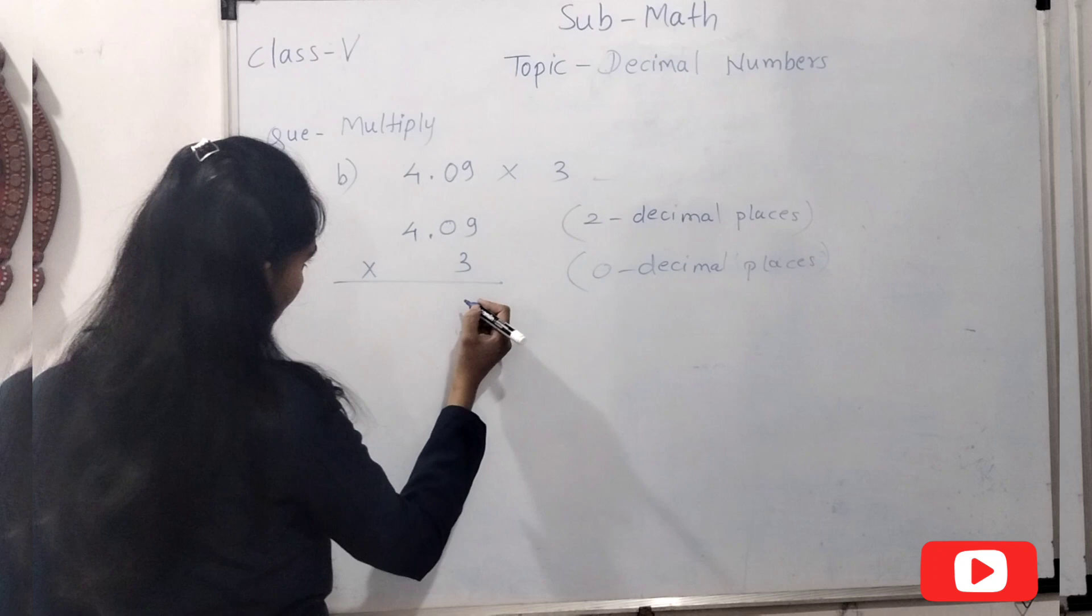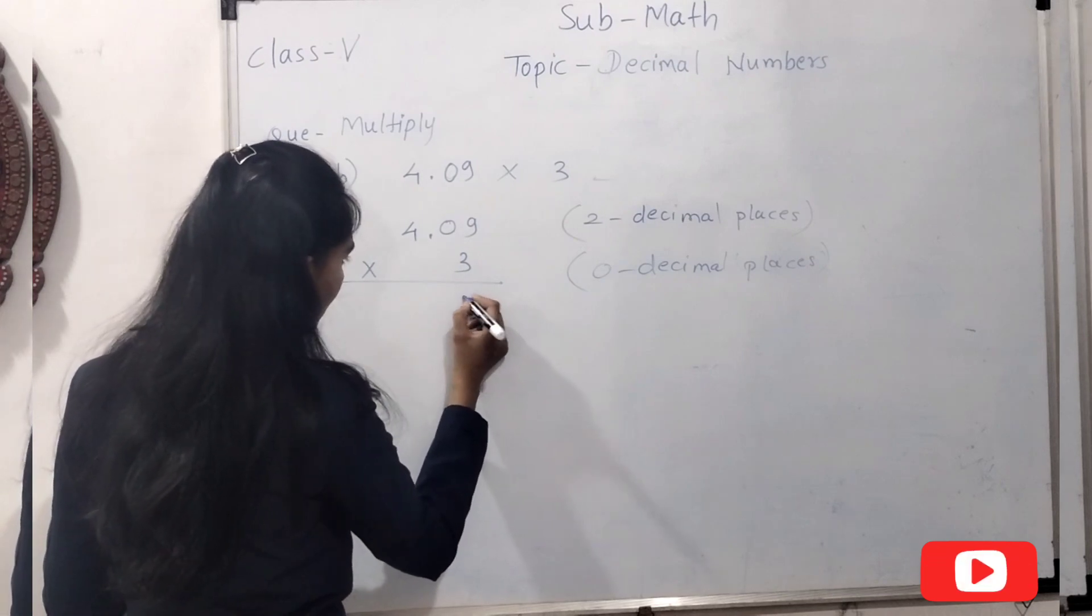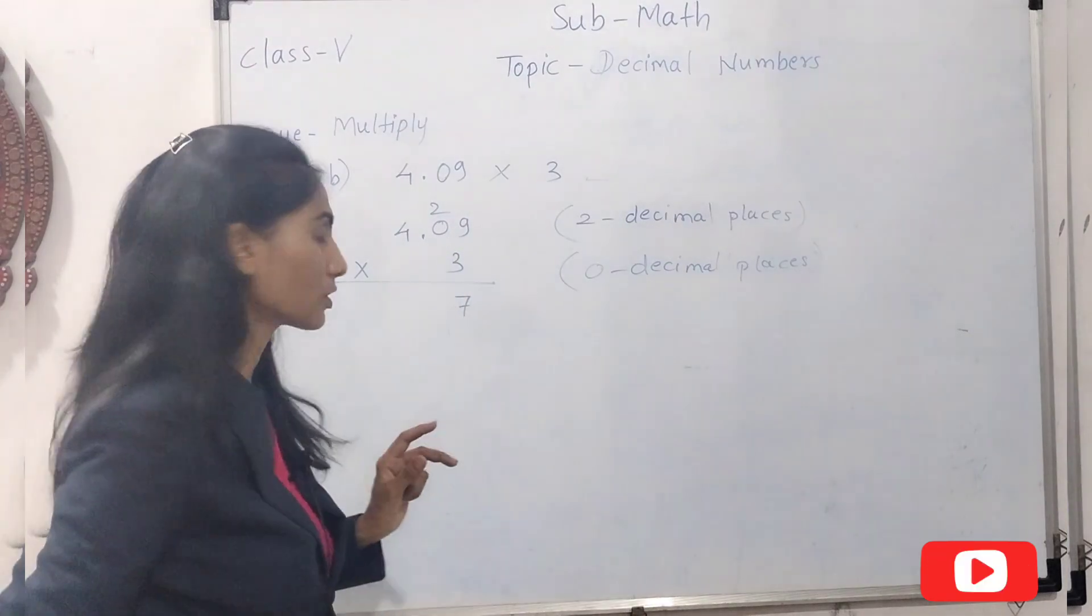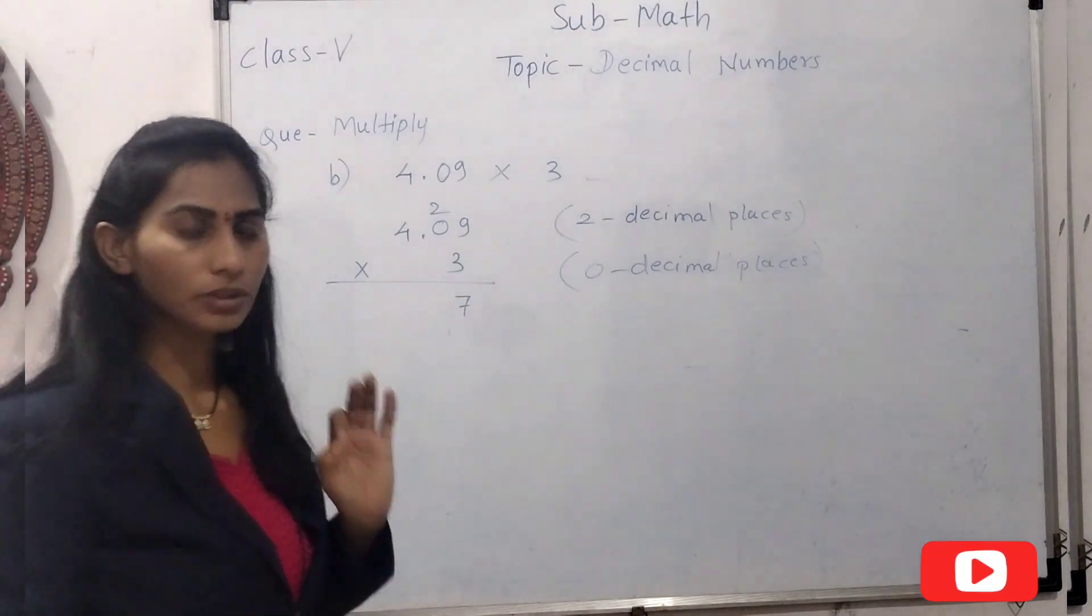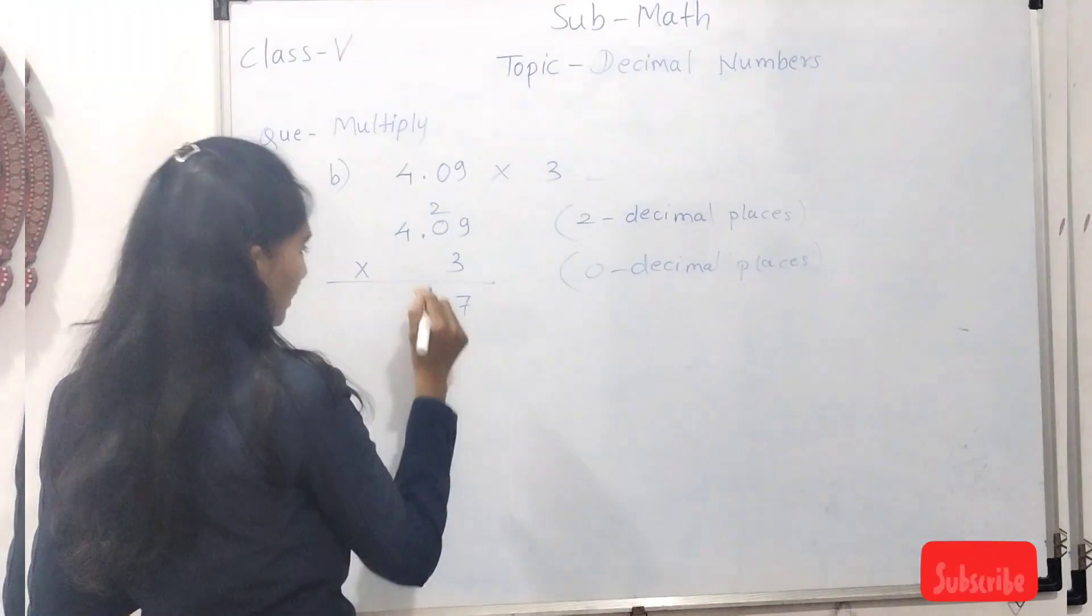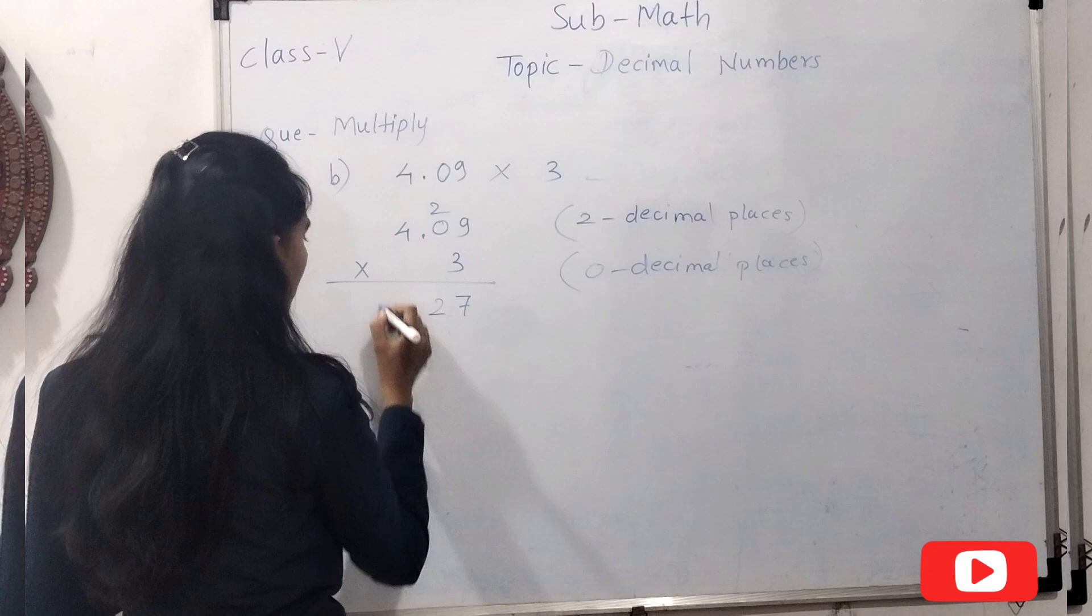Now do multiplication. 3 nines are 27, 2 carry over. 0 multiplication, 3 zeros are 0, because when we multiply 0 by any number the product will be 0. Then add this carry, we get 2. Then 3 fours are 12.